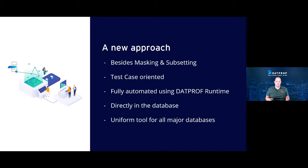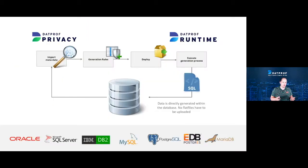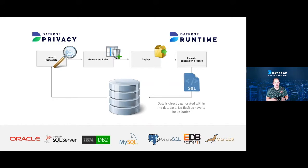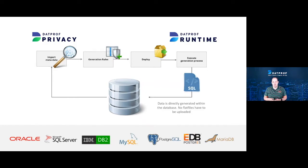How does it work? How can we generate synthetic data in dot.prof Privacy? There are actually two methods of creating synthetic data. The first is what we call synthetic data replacement, which generates synthetic data to replace existing values inside an existing database — this is part of our default data masking functionality. Today we focus on the second method, which is actually generating new, non-existing data, even in an empty database without any data.